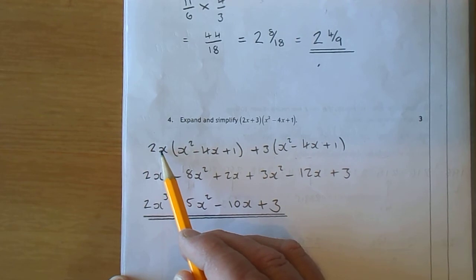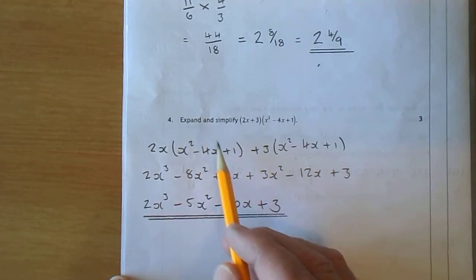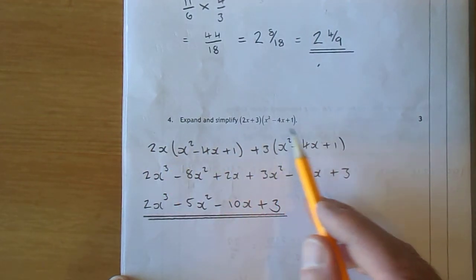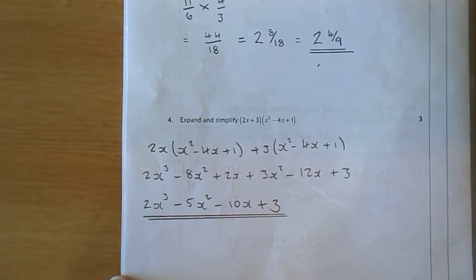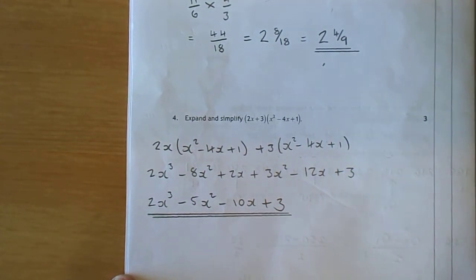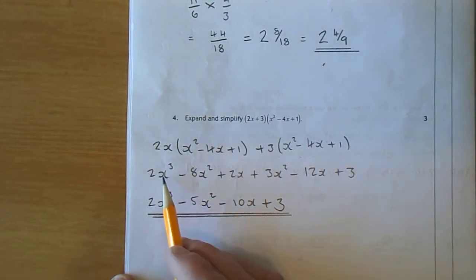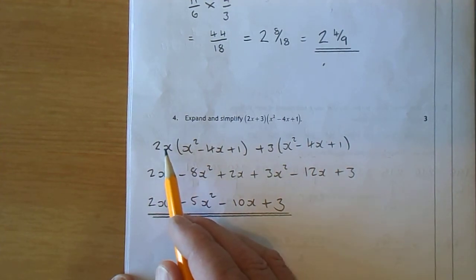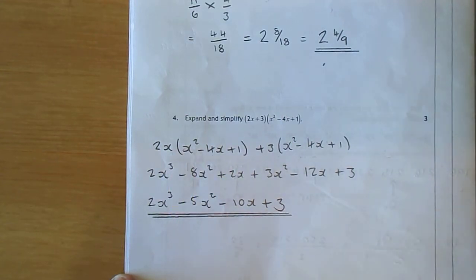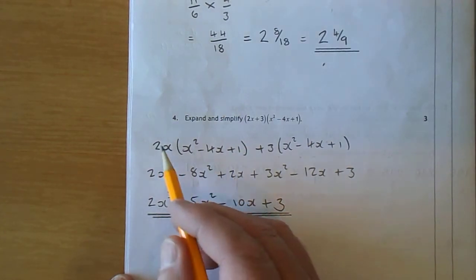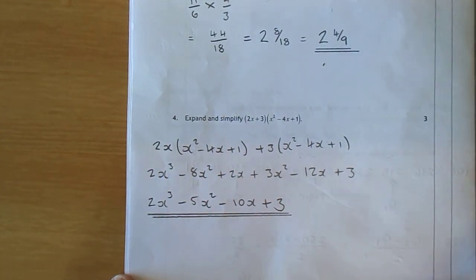So we now have 6 little multiplications to do. We have 1, 2, 3 on this side, 4, 5, 6 multiplications over here. So let's do it. 2x times x squared is 2x cubed. 2x times minus 4x. 2 minus 4 is minus 8. x times x is x squared. So it's minus 8x squared. Plus 2x times 1 is just 2x.